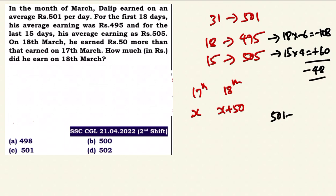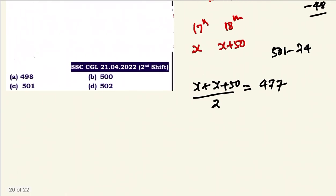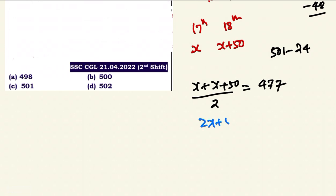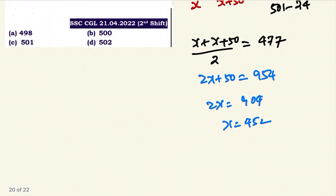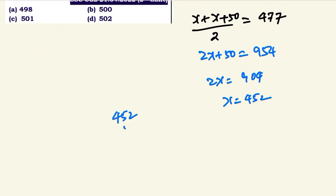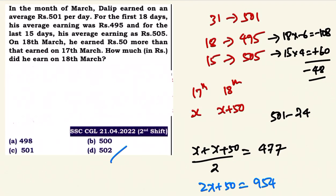The deviation of minus 48 means the 17th and 18th March numbers sum to 501 minus 24 each side. Let 17th March be x rupees and 18th March be x plus 50. So 2x plus 50 equals 954. Therefore 2x equals 904, x equals 452. 18th March earnings are x plus 50 equals 502. So option D, 502 rupees, is the answer.